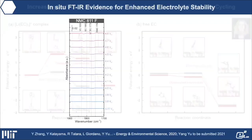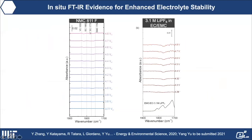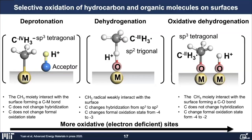For both approaches — modifying oxide surfaces or lowering the activity of free carbonate solvent — further in-situ FTIR confirms no generation of dehydrogenated species is detected upon charging to 4.8 V in a similar cell setup as previously used.